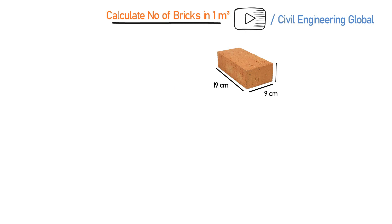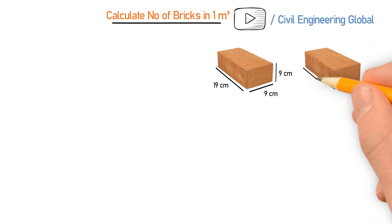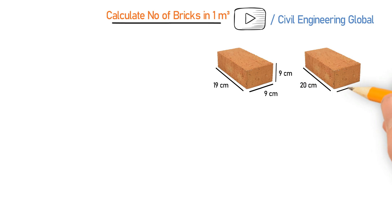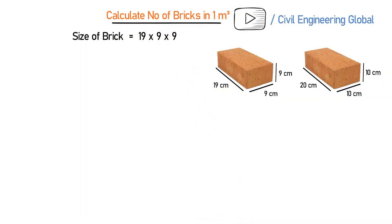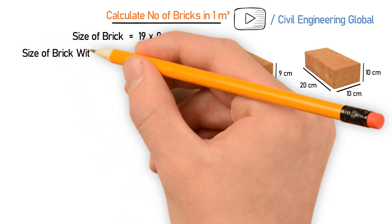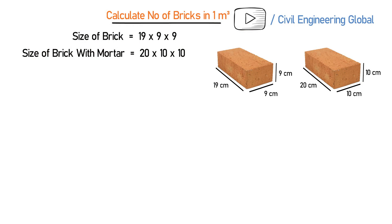So this is the normal brick size: 19 × 9 × 9. When we add the mortar, we will add 1 centimeter extra. So the length will become 20 centimeters, the breadth will become 10 centimeters, and the height will also become 10 centimeters. So the size of the brick with mortar is equal to 20 × 10 × 10 centimeters.